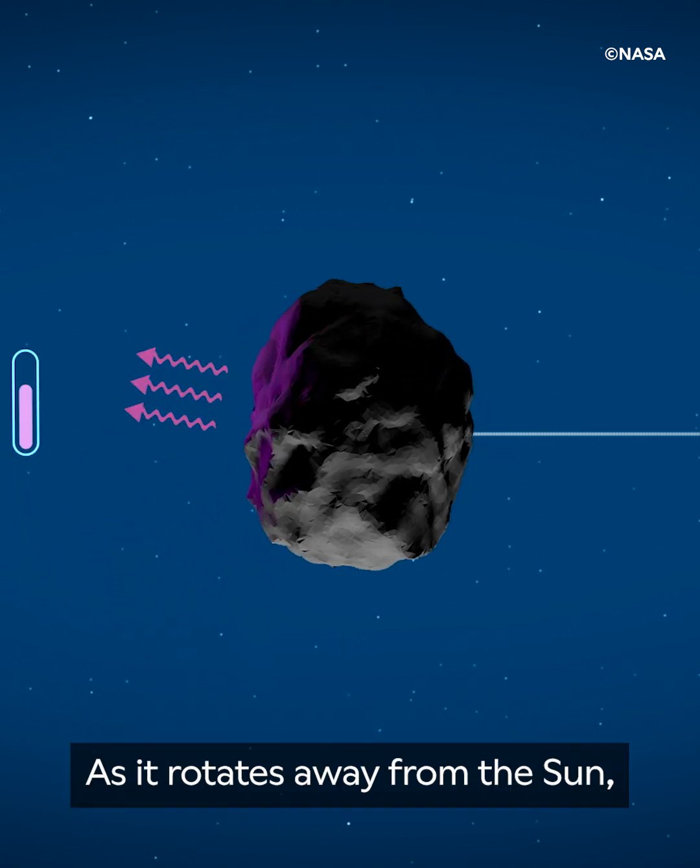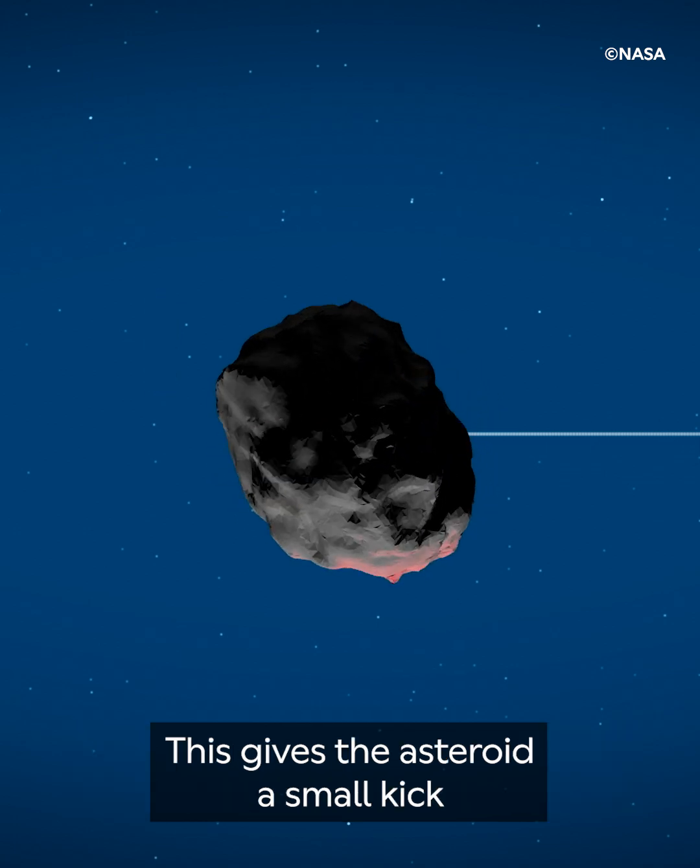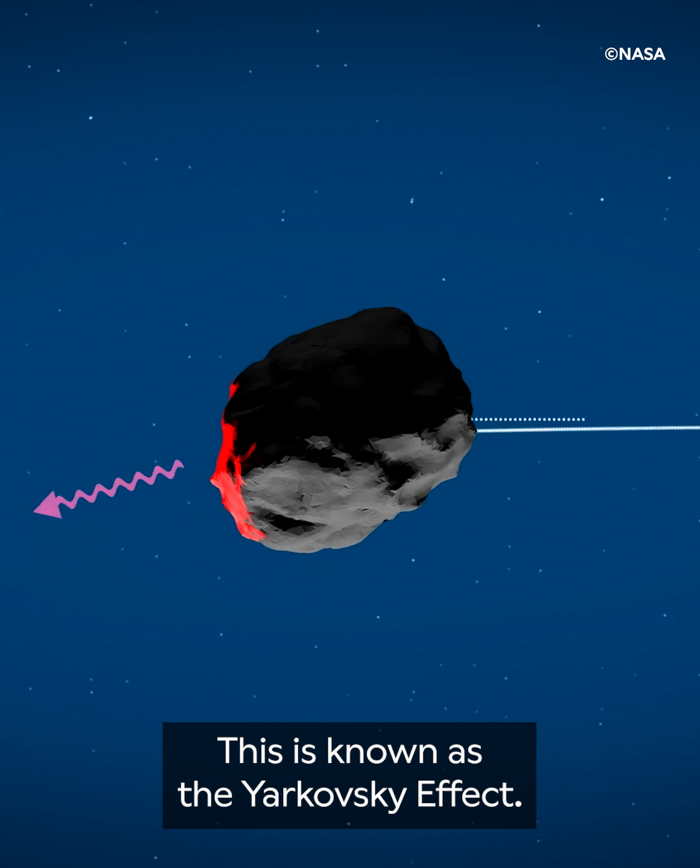As it rotates away from the Sun, the surface cools and radiates that heat outwards. This gives the asteroid a small kick in the opposite direction. This is known as the Yarkovsky effect.